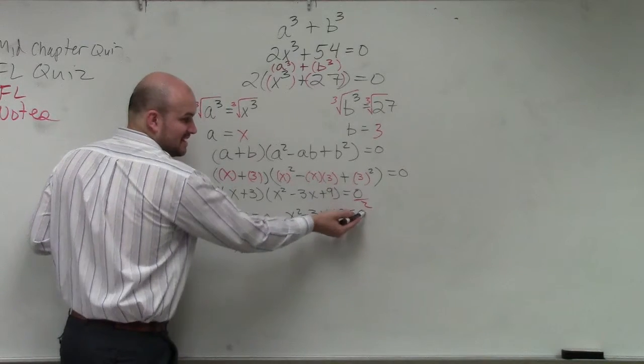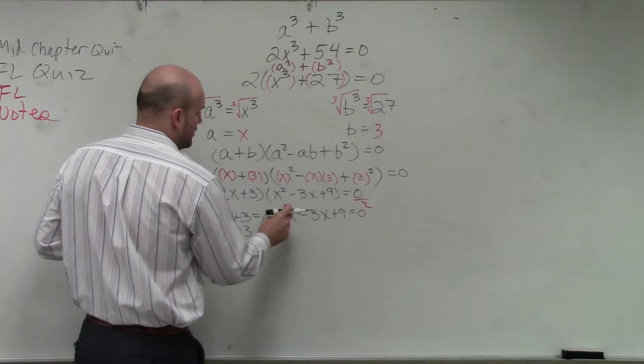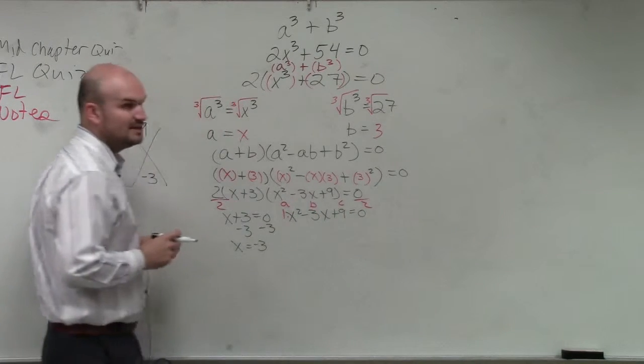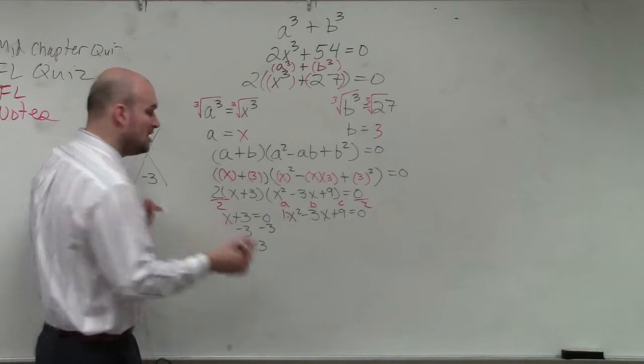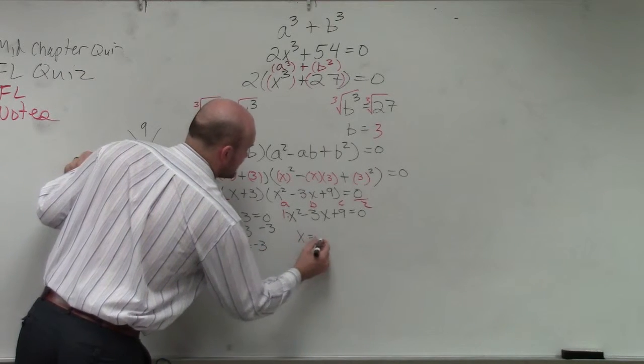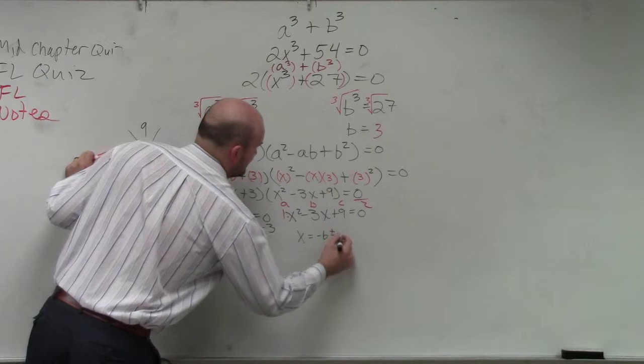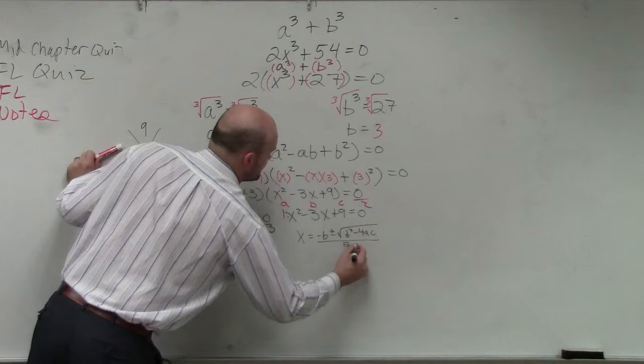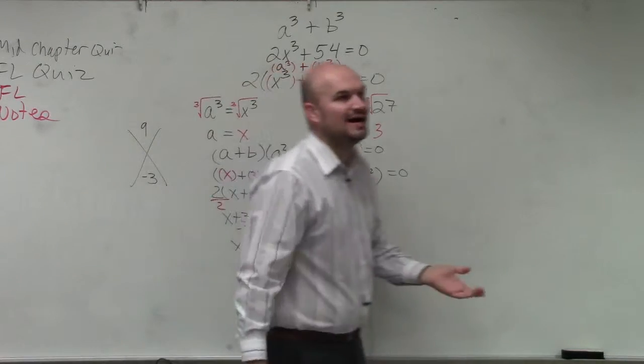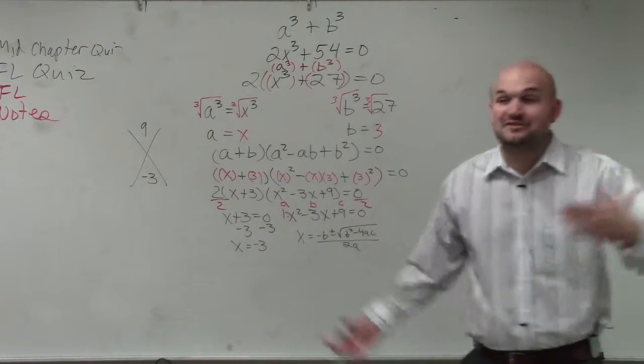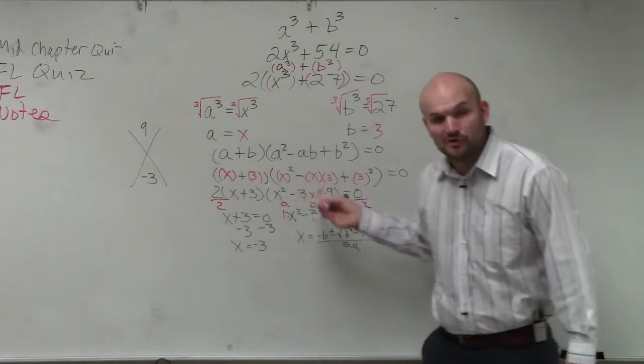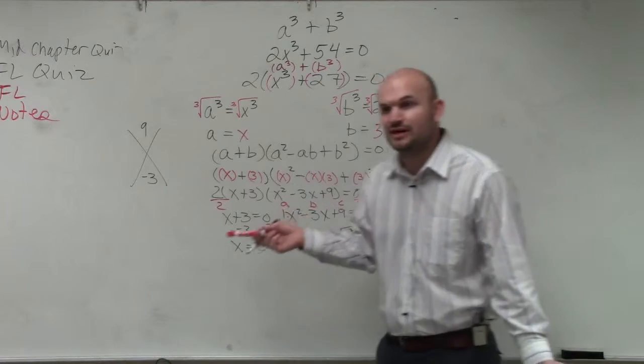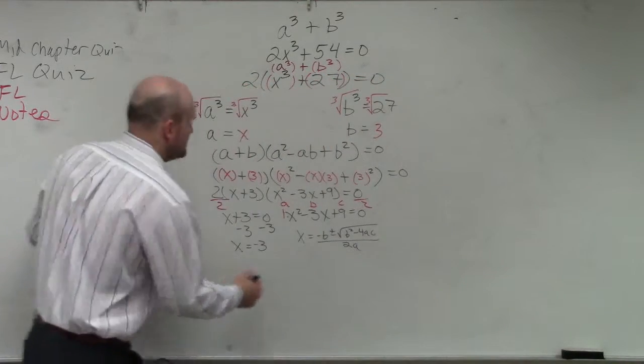So we have a quadratic set equal to 0. So we know that a is 1, b is negative 3, and c is 9. Quadratic formula, if you guys don't remember, is opposite of b, plus or minus the square root of b² minus 4 times a times c, all over 2 times a. So in reality, for your homework tonight, if you factored everything correctly, you're really just setting both of your factors equal to 0, solving this, and then solving using the quadratic formula.